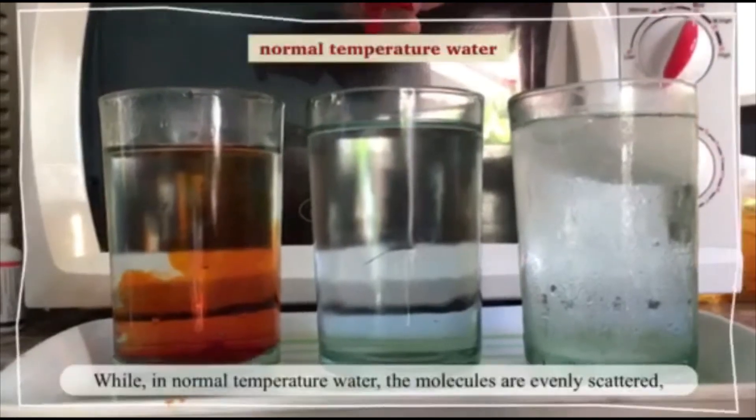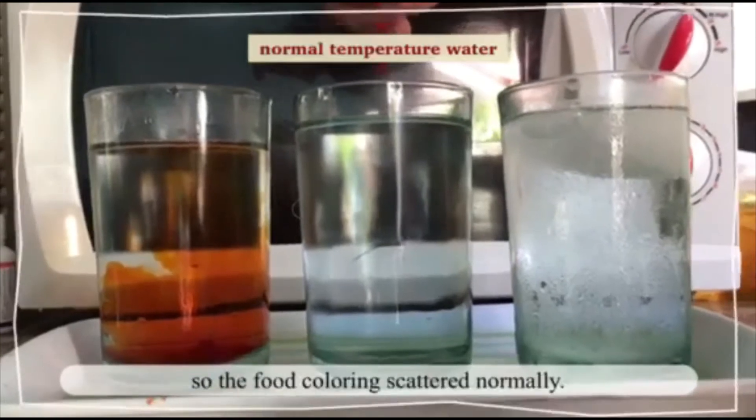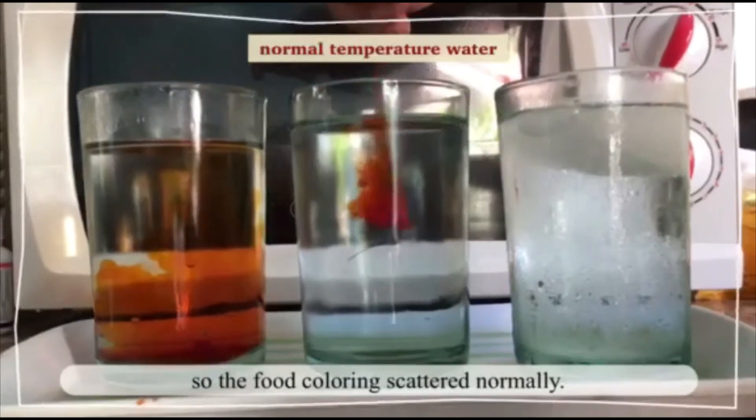While in normal temperature water, the molecules are evenly scattered, so the food coloring scattered normally.